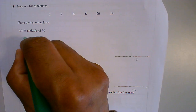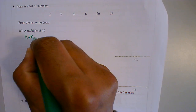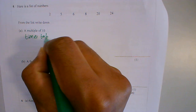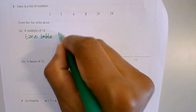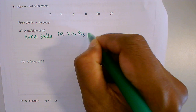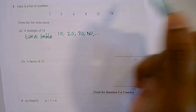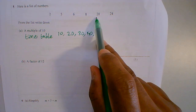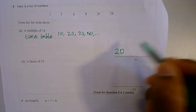Multiple means times table. So what's in the times table of 10? 10, 20, 30, 40, and so on. So you can see we've got 20 here. So my answer is 20.